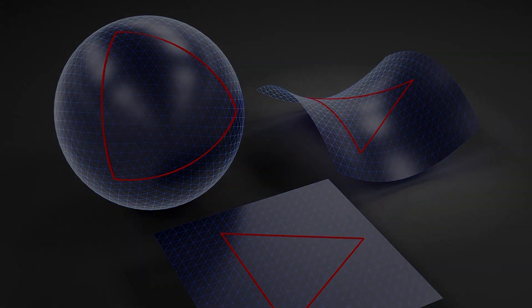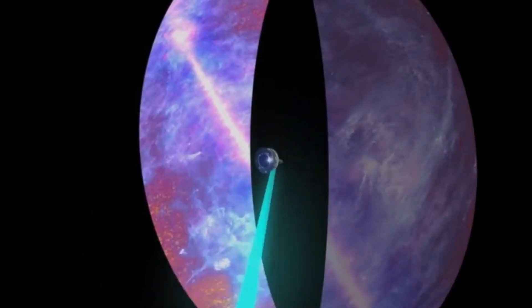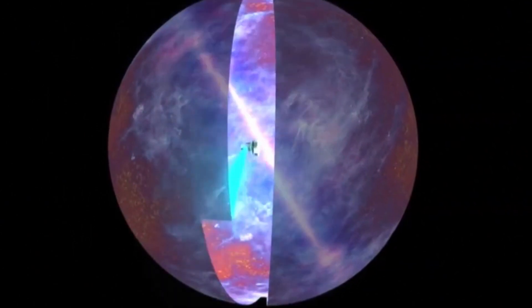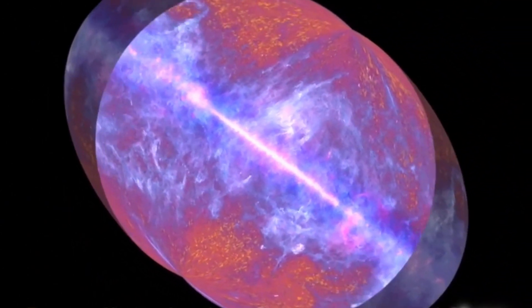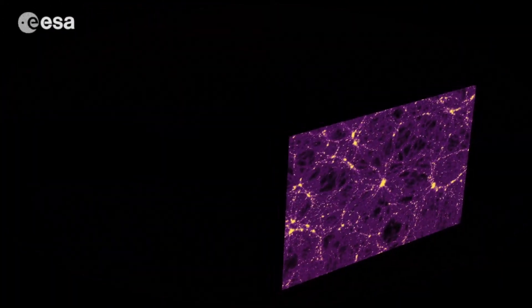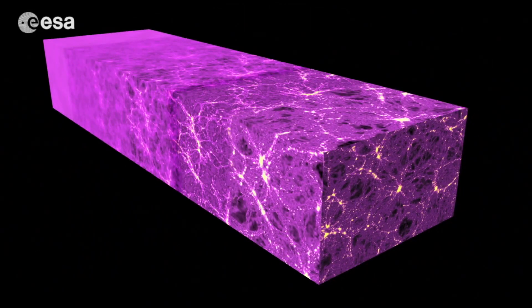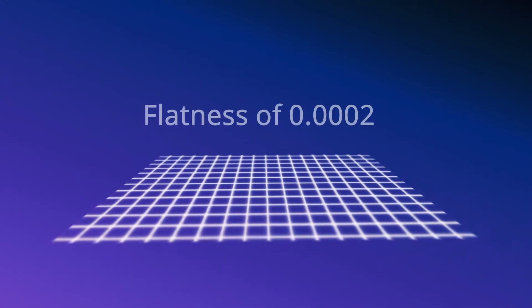So how curved is the universe? What is its true scale? From our analysis of multiple sources, scientists have concluded that the universe is almost completely and utterly flat. In fact, the more we analyze the data, the closer to perfectly flat it becomes, with a current estimate of around 0.0002.